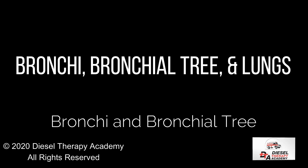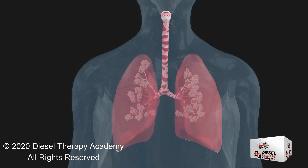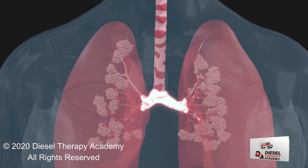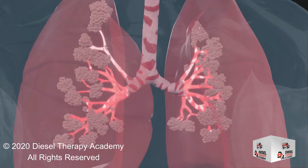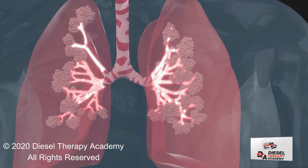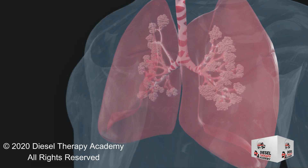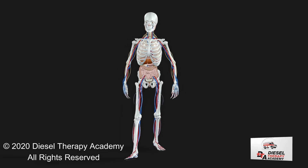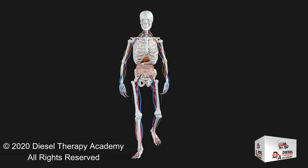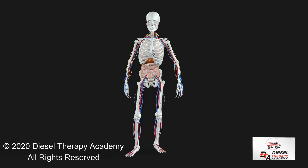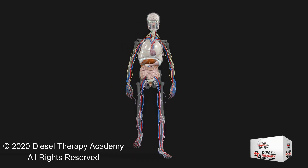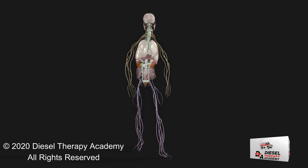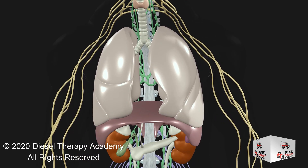In the mediastinum, at the level of the fifth thoracic vertebra, the trachea divides into the right and left primary bronchi. The bronchi branch into smaller and smaller passageways until they terminate in tiny air sacs called alveoli. The cartilage and mucous membrane of the primary bronchi are similar to that in the trachea. As the branching continues through the bronchial tree, the amount of hyaline cartilage in the walls decreases until it is absent in the smallest bronchioles. As the cartilage decreases, the amount of smooth muscle increases.